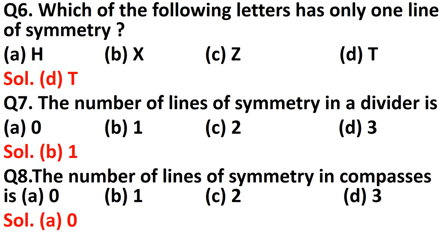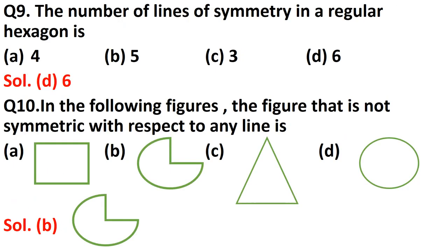Question number nine: the number of lines of symmetry in a regular hexagon. A regular hexagon has all sides and angles equal, and hexagon means six sides. A figure with six equal sides is a regular hexagon, and it has six lines of symmetry. Option D is correct — a regular hexagon has six lines of symmetry.